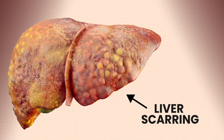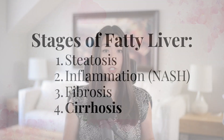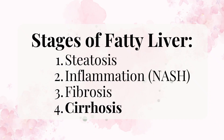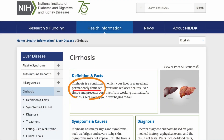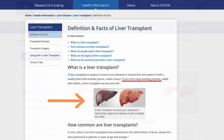Eventually, if scar tissue replaces too much of your healthy and normal liver tissue, you move into the fourth stage, which is called cirrhosis. This is a condition where your liver is so scarred with hard tissue that it's permanently damaged and your liver stops working properly. When that happens and the damage is severe enough, your only option at that point is usually a liver transplant.